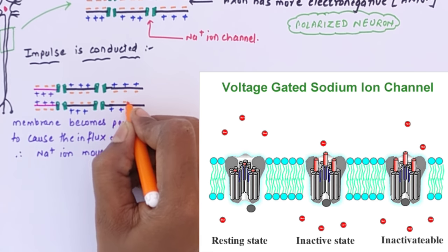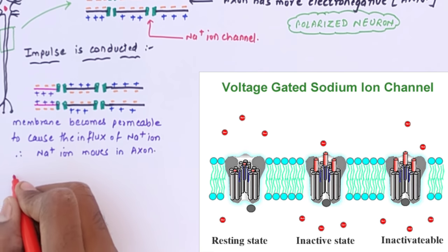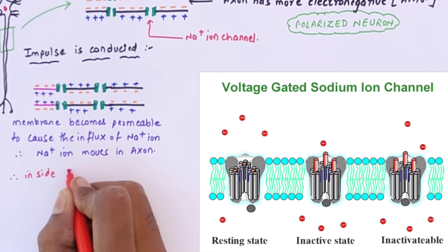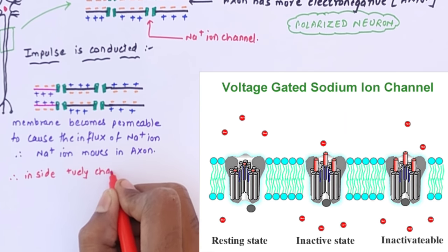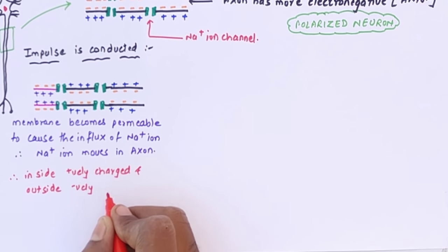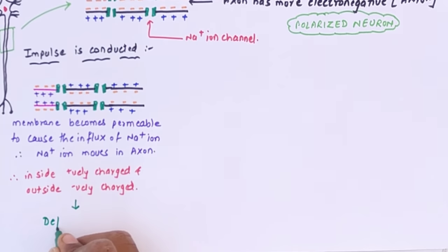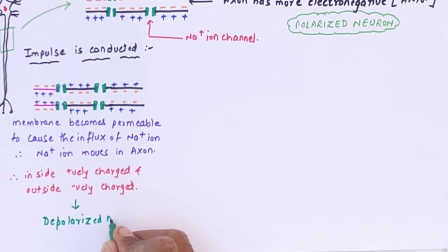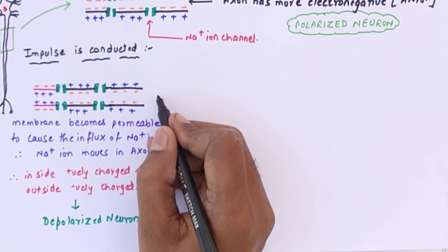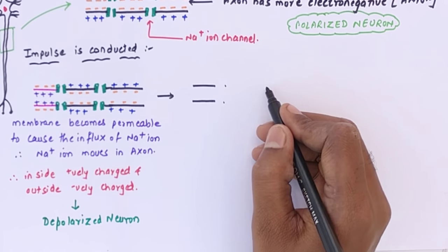This pink area of the neuron is called a depolarized neuron because the charges have been reversed. The rest of the neuron remains polarized — inside negative and outside positive. So we have a depolarized section at the front and a polarized section in the remaining portion. In a depolarized neuron, inside is positive and outside is negative.